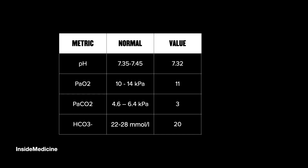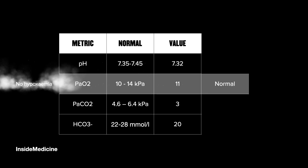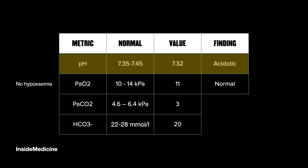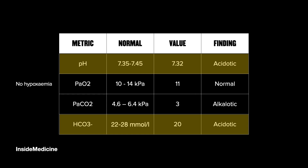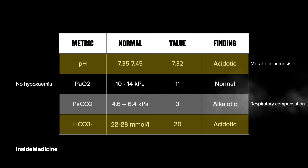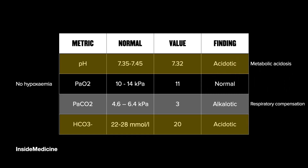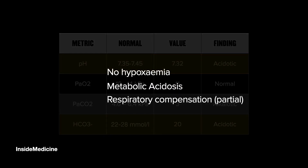In our second example: the patient is not hypoxic. Looking at acid-base, the pH is acidotic. It doesn't match the PaCO2 — the CO2 is low. It does match the HCO3, so this is a metabolic acidosis. The low PaCO2 indicates respiratory compensation, which is again partial because the pH is not normal. In summary: no hypoxemia, metabolic acidosis with partial respiratory compensation.